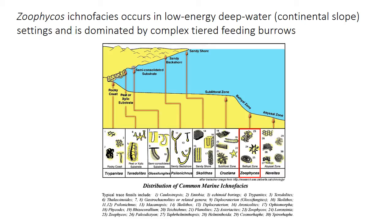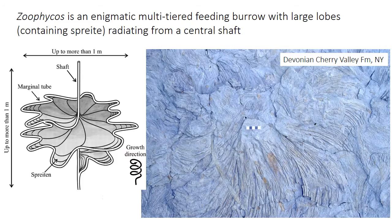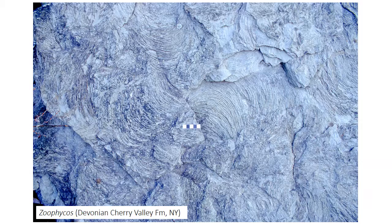This ichnofacies is really characterized by its namesake, Zoophycos, a very complicated and strange tiered feeding burrow. It's very large — up to meters in size — composed of a big central shaft with large lobes that radiate out in a corkscrew-like pattern. The lobes have spreitae, making large swirling patterns on horizontal surfaces. Here in the Devonian of New York, the lobe-shaped spreitae are very clear — what we're seeing are the spreitae as the burrow constantly reworked itself.